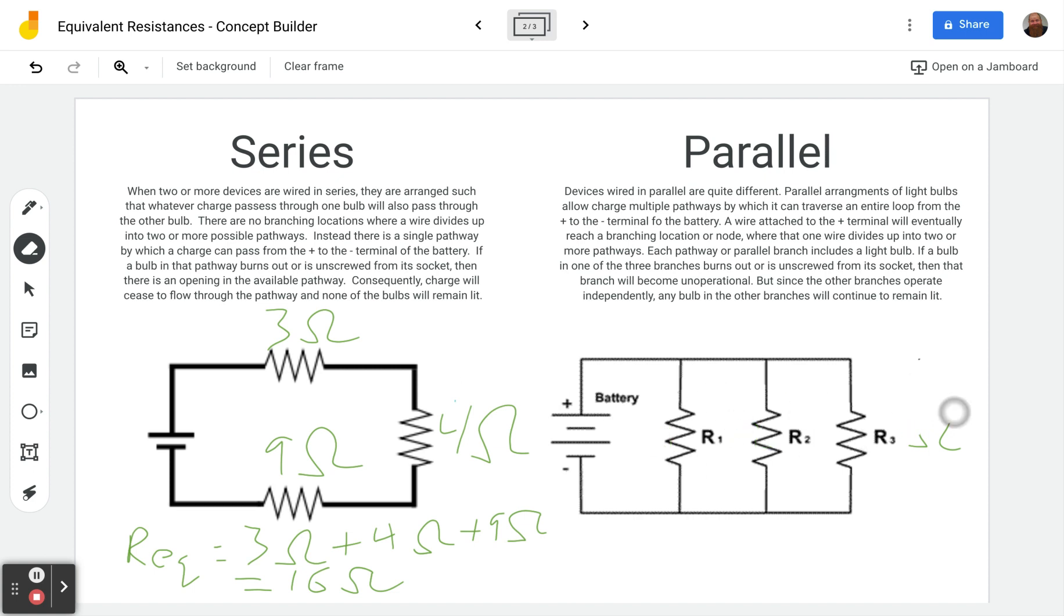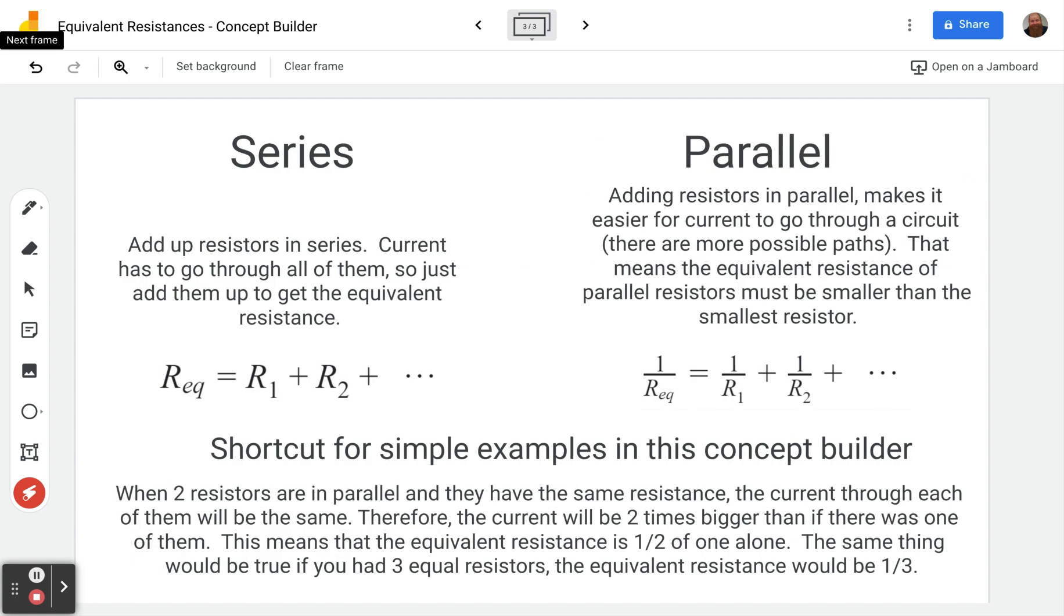So let's just say we had 12 ohms and 12 ohms. And this last one's not here at the moment. Then we'll get a certain current through here. We'll get the same current through there. So if we add that plus the same amount, that's like multiplying by two, it's twice as big. So the current is twice as big. Well, if the current is twice as big, that means the resistance was half the size. So therefore the current will be two times bigger than if there was one of them. This means the equivalent resistance of those two resistors is one half of one alone.